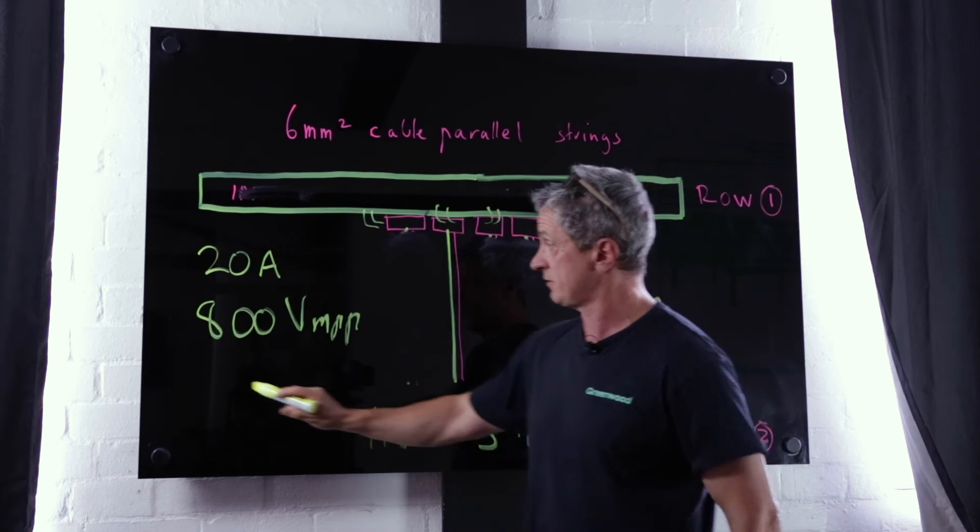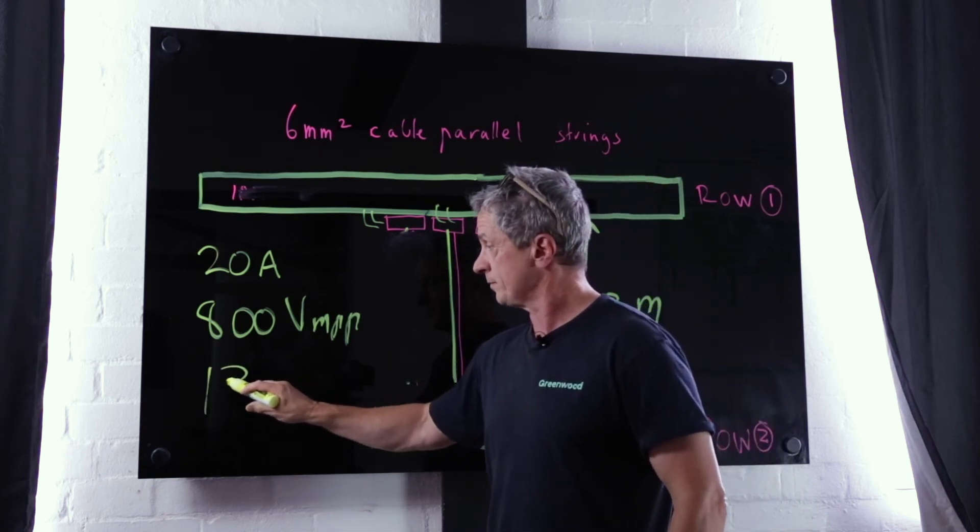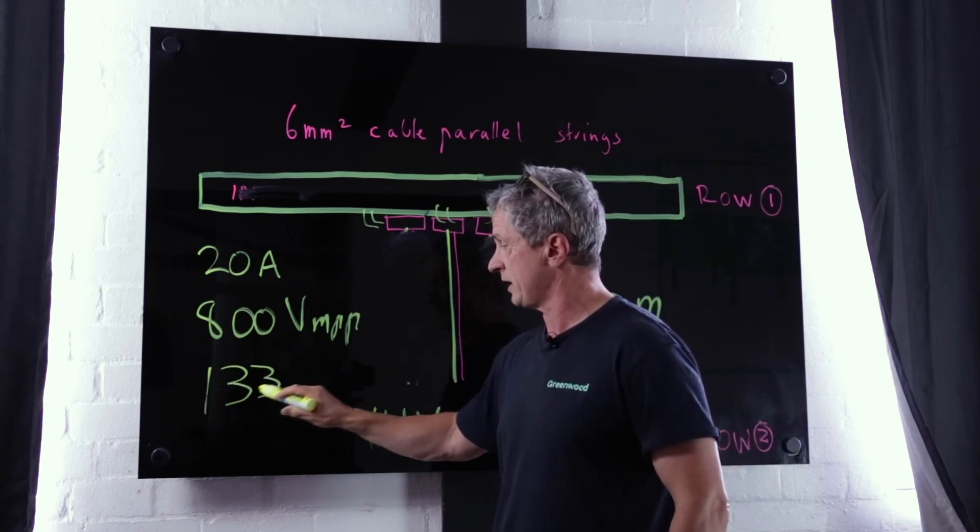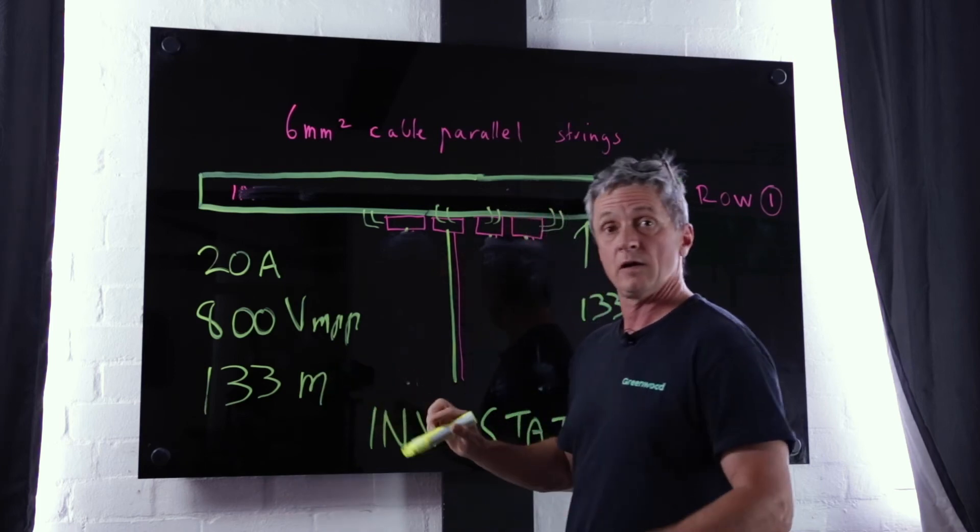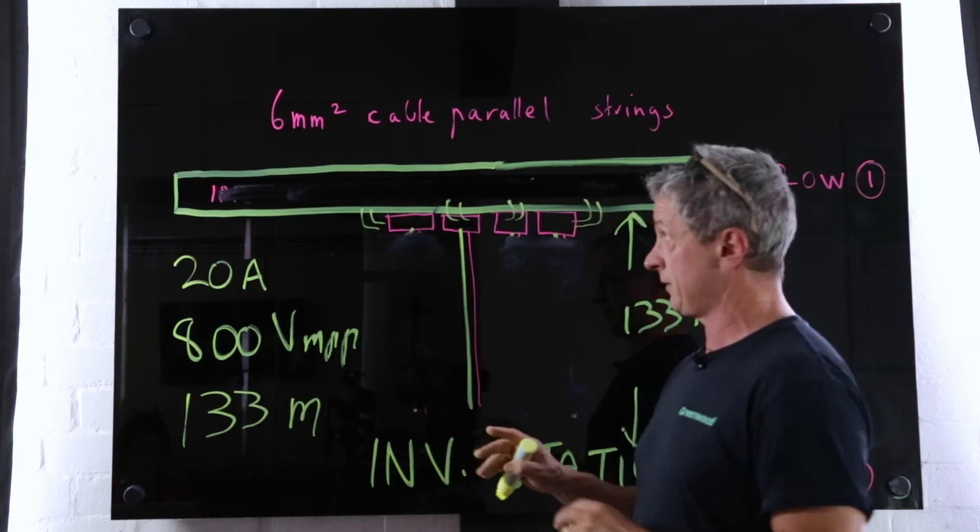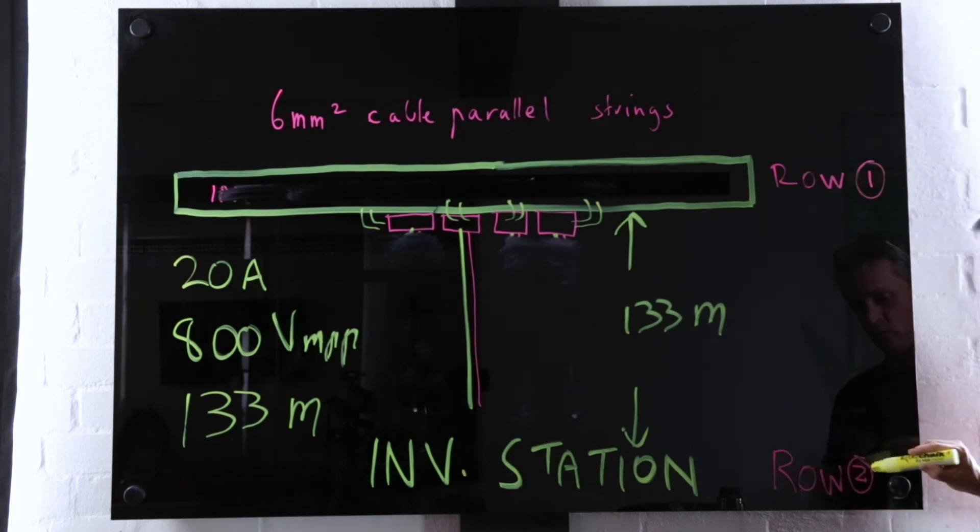That's row one all the way to row 20, not row two. So for 6mm parallel cable we're looking at a volt drop of 2.49% for the cable run holding 20 amps because it's two strings parallel over 133 meters.